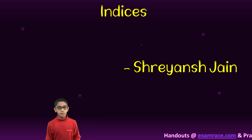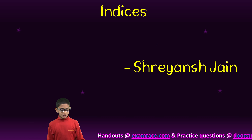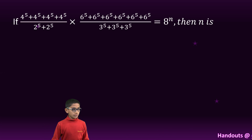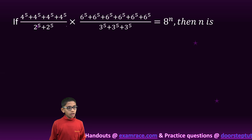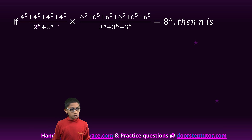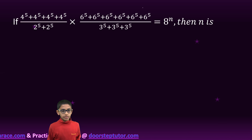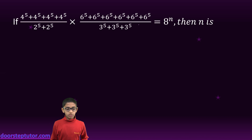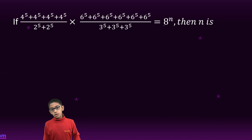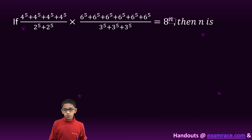Hello friends, today we will solve some interesting problems on indices. So let us start. Our question is: 4 raised to 5, plus 4 raised to 5, plus 4 raised to 5, plus 4 raised to 5, upon 2 raised to 5 plus 2 raised to 5, into 6 raised to 5 and 6 times, upon 3 raised to 5 plus 3 raised to 5 plus 3 raised to 5, is equal to 8 raised to n. We have to find the value of n.